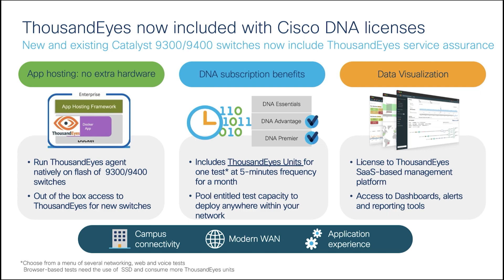For the second benefit, we are providing ThousandEyes units for DNA Advantage or Premier license, and it can be used for one non-browser-based test at 5-minute frequency for a month. Your ThousandEyes units will be pooled in your ThousandEyes account, so the more Advantage or Premier licenses you have, the more ThousandEyes units you will have for testing. You will see a more detailed explanation in a few slides.